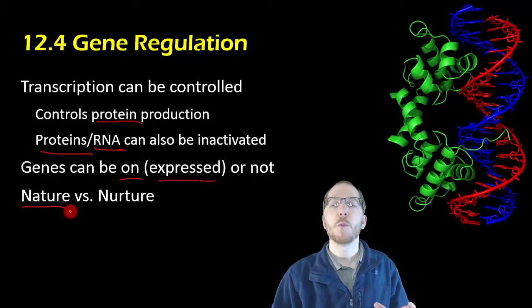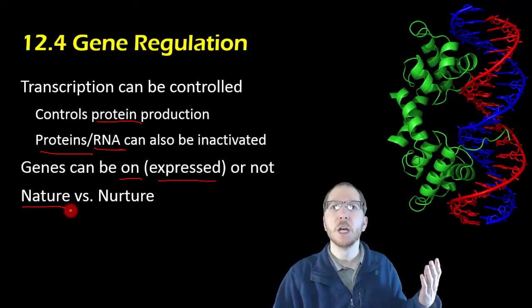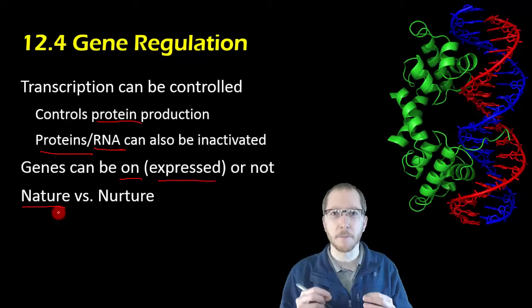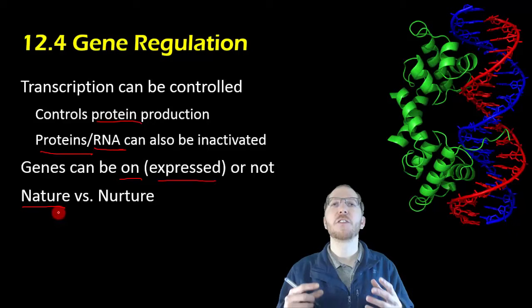But we don't need every cell to produce every protein that can be made by every gene all the time. Instead, what we want is certain cells based upon the type of cell they are, based upon the conditions that we're in, to produce only a certain amount of those genes' proteins, just the ones that we need for them to accomplish what those cells are required to. For instance, our liver cells and our kidney cells and our skin cells all have the exact same genes in them, but they have different genes activated in each of them that allows for them to do their particular job.